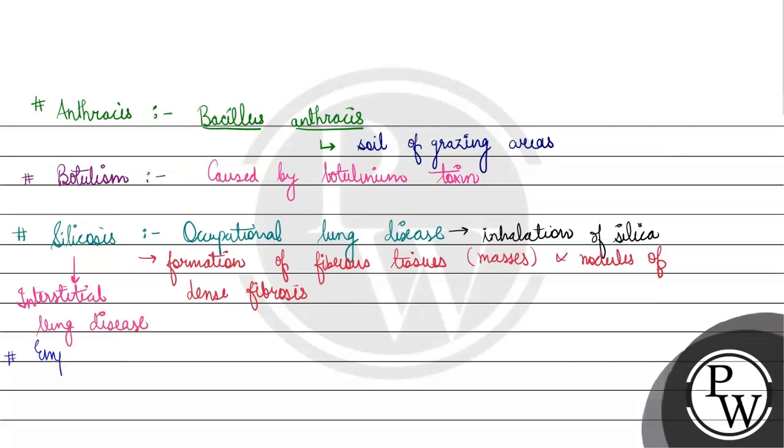Last, jo option hai, woh hai emphysema. So, jo emphysema hai, emphysema kis ki vajay se hota hai? Jab lungs ke jo alveoli hai, they will start to destroy. So, it is due to destruction of the alveoli of lungs.